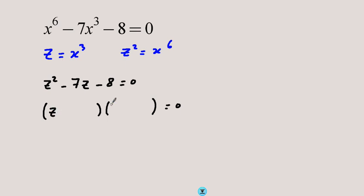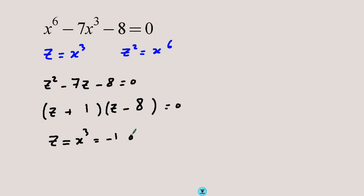Factorizing: z and z with different signs, the larger factor goes with the negative, giving 8 and 1. So z, which is x cubed, equals negative 1 or 8. Since this is a cube term the negative is acceptable, so taking cube roots gives x equals negative 1 or 2.